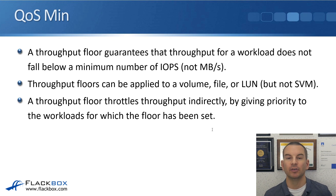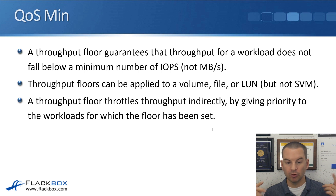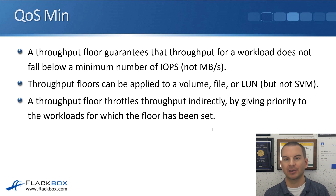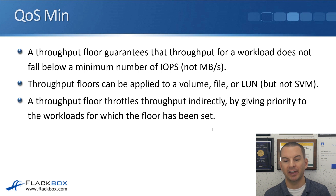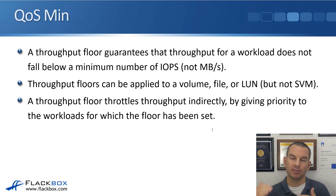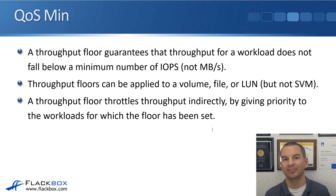A throughput floor guarantees that throughput for a workload does not fall below a minimum number of IOPS. When we set a ceiling, we could set a value in either IOPS or megabytes per second, or both. When we set a floor, megabytes per second is not available — it's always going to be IOPS. Throughput floors can be applied to a volume, a file, or a LUN, but not an SVM. Setting a floor is a more recently available feature, so there aren't quite as many options right now.